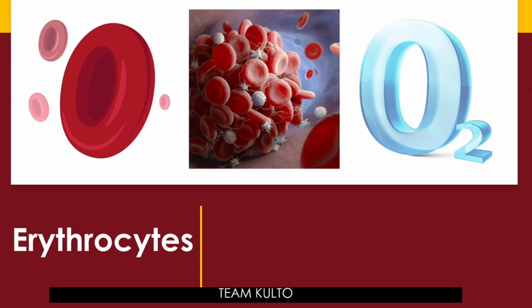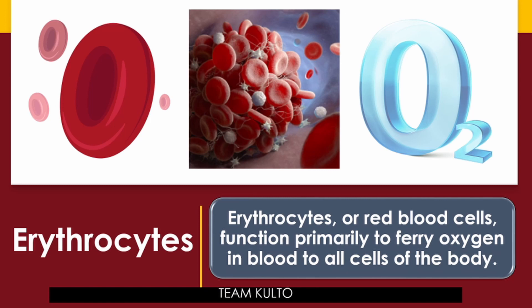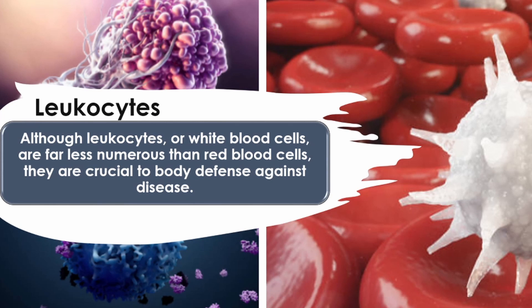First, erythrocytes — also known as red blood cells or RBCs — function primarily to ferry oxygen in the blood to all cells of the body. Next, leukocytes — although white blood cells or WBCs are far less numerous than red blood cells, they are crucial to body defense against disease. This includes neutrophils, basophils, and eosinophils. The upcoming discussion will cover these blood components and formed elements in detail.